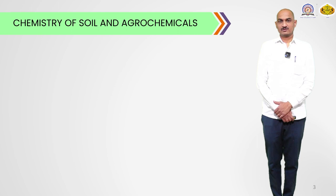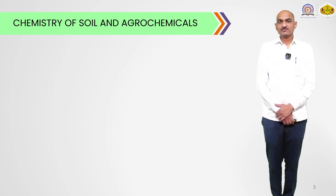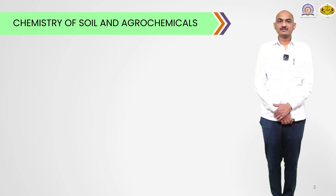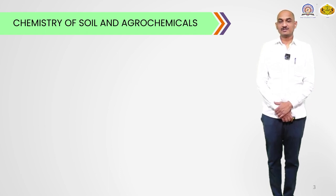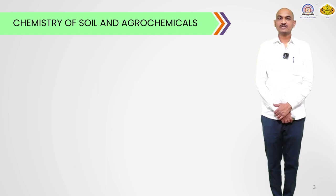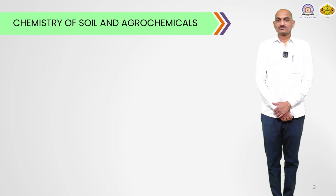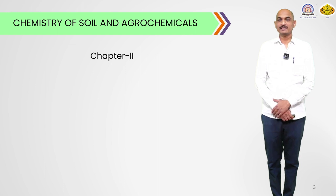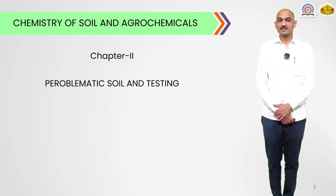We have already started our subject, Chemistry of Soil and Agrochemicals. In this subject, we had already discussed our first chapter, Soil Chemistry, in our previous few sessions. Now today we start with the second chapter from the course, Chemistry of Soil and Agrochemistry, and the name of the chapter reads: The Problematic Soil and the Testing.